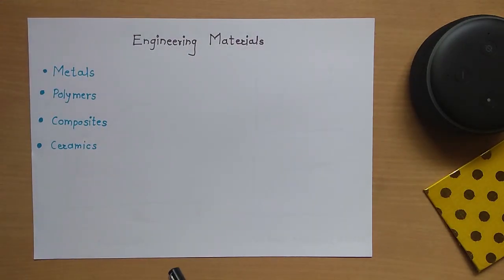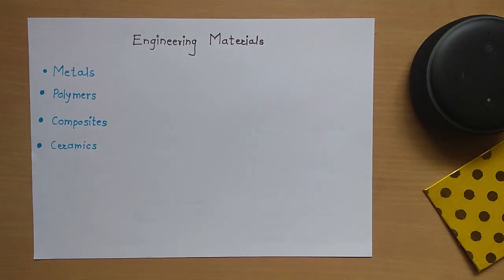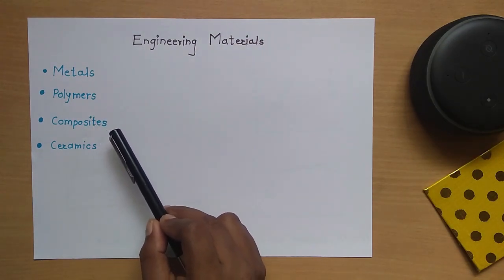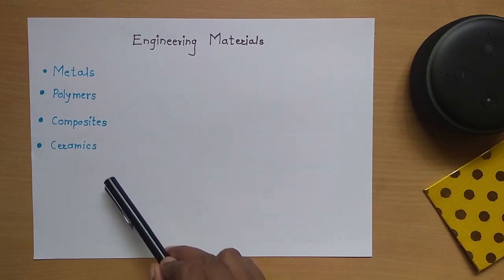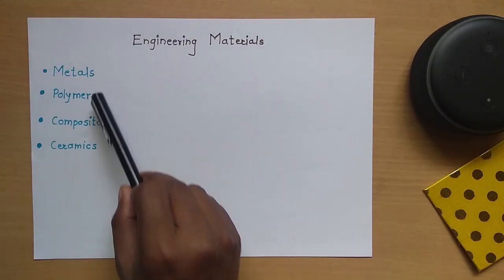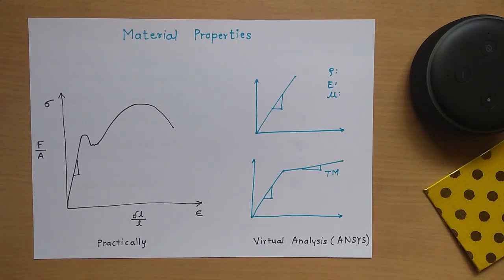Basically, materials are called engineering materials because of the applications we use in engineering. The materials required for those applications are called engineering materials. They are classified into the following types: metals, polymers, composites, and ceramics. But 80% of structures are made up of metals, so metals are the most important engineering material.